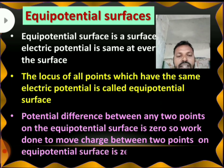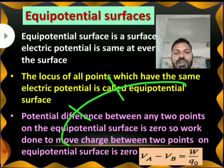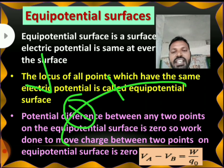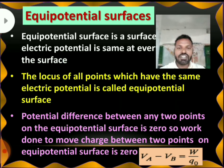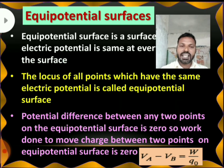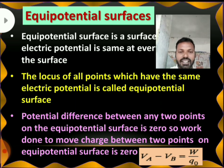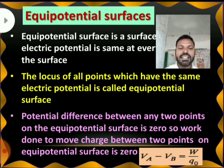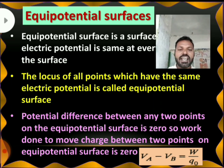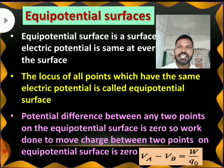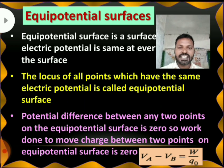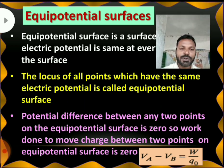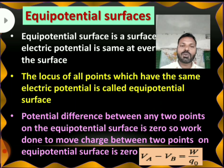Here is my equipotential surface. I am taking two points. If I find out the electric potential, this is Va, and if you find out electric potential at the other point, this is Vb. Since it is an equipotential surface, all the points have the same potential. That means Va is equal to Vb. Now, Va is equal to Vb — if I find out the potential difference, Va minus Vb is equal to 0, because they are equal. On the equipotential surface, the potential difference between two points is 0.